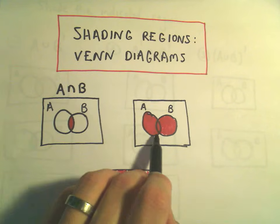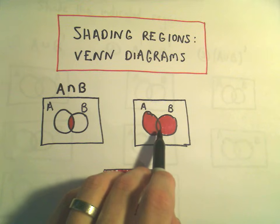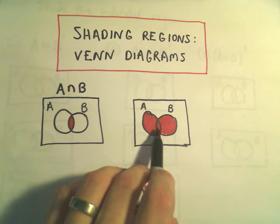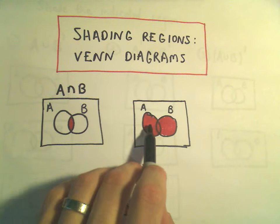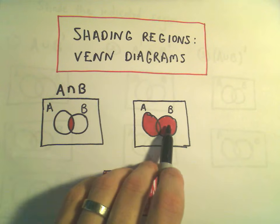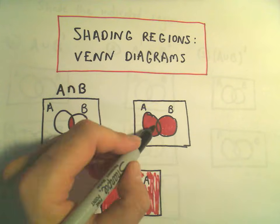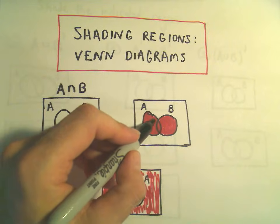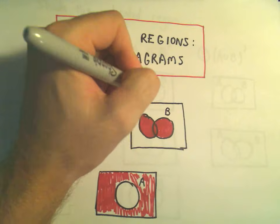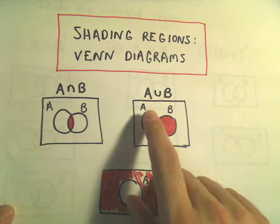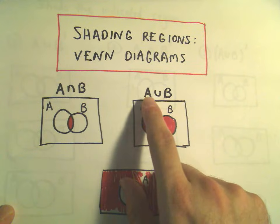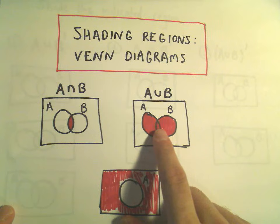Notice in our second little Venn diagram here, we've got all of A shaded and all of B. So we've used everything from A, everything from B. Basically you've been shaded if you were in circle A or in circle B. So if we had to shade the region A or B, we just shade everything.